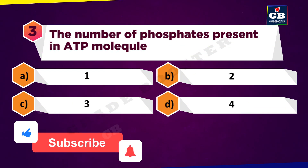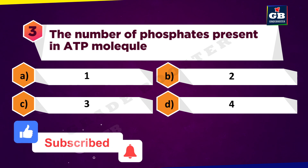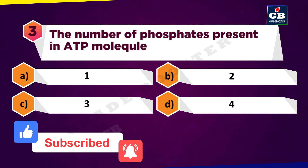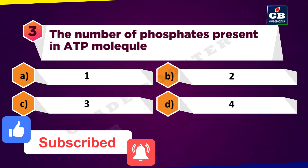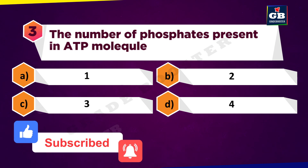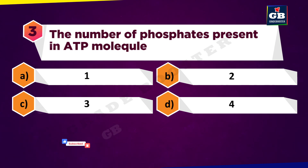The number of phosphates present in an ATP molecule: A. One, B. Two, C. Three, D. Four.